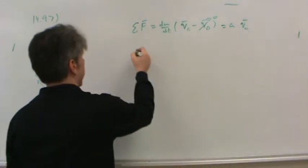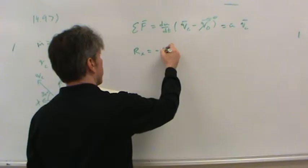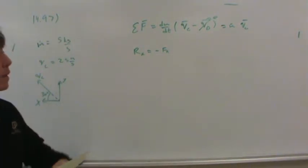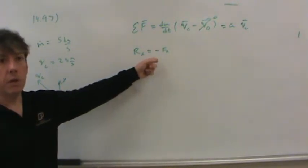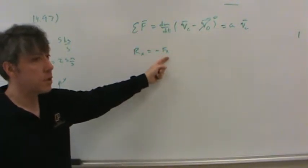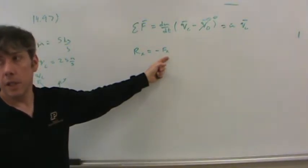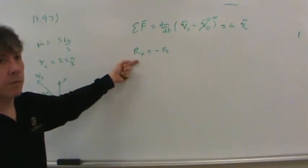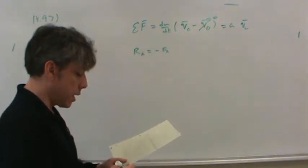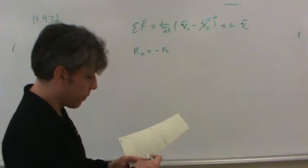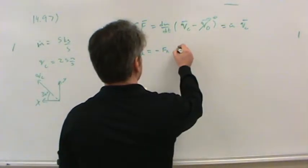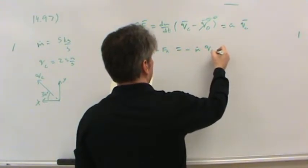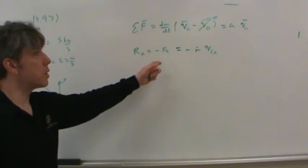And so this would be the same thing as m dot VC. And so the reaction in the x direction on the trailer would be the negative of the force applied to the limbs to get them to accelerate. Does this make sense? It's just equal and opposite reactions. This is the force on the limbs that caused them to accelerate and make them do this. This is the reaction. This is where that force comes from. It would be the reaction on the trailer. Not trailer, the chipper.